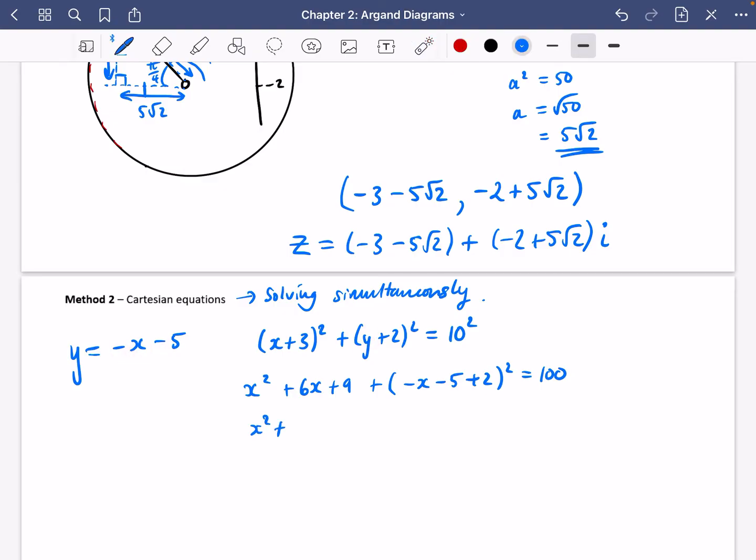So begin by expanding these brackets. I have x² plus 6x plus 9 plus (minus x minus 5 plus 2)² equals 100. I've just subbed in this in place of y. So it's x² plus 6x plus 9 plus x². I should probably quickly simplify this over here. So it's going to be (minus x minus 3)². That's x² plus 6x plus 9 as well.